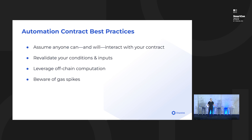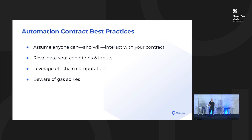There are some best practices you should consider if you're looking to automate smart contracts, especially using something like Chainlink automation. The first one is you should assume that anyone can and will interact with your contract at any point in time. On the other side of that, if you're assuming that anyone can interact with your contract, you also want to make sure that when they do, you're revalidating any conditions that you set in your check. If somebody tries to interact with your contract out of turn — whether maliciously or not — they shouldn't be able to do so, and that transaction should revert.